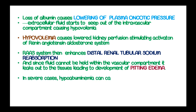In severe cases, hypoalbuminemia can cause hypovolemia with pre-renal failure. This edema in nephrotic syndrome starts around the eyes as periorbital edema, because the skin around the eyes is loosely attached to the bones and muscles, then spreads to the body causing generalized edema known as anasarca.